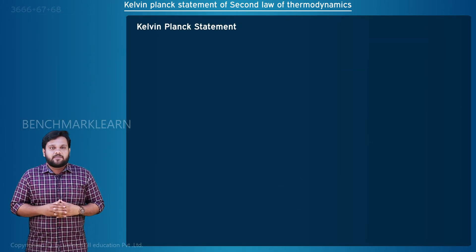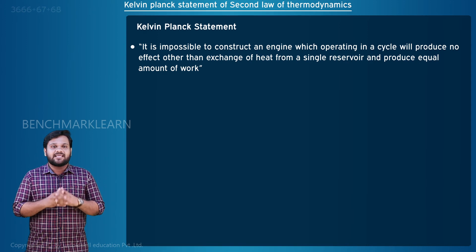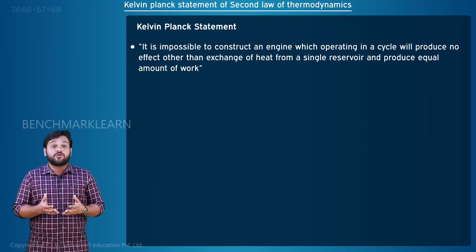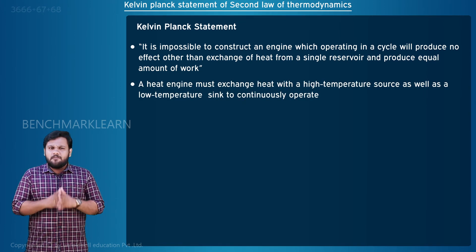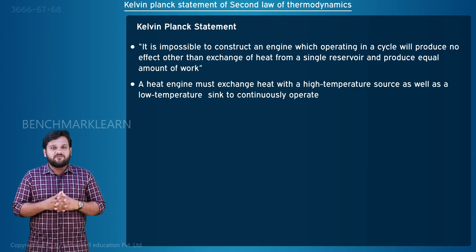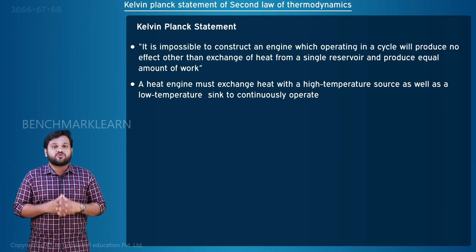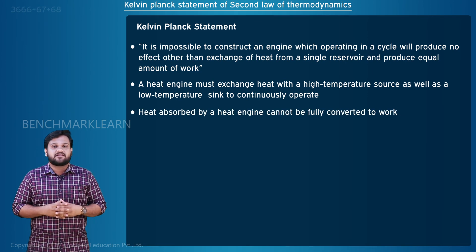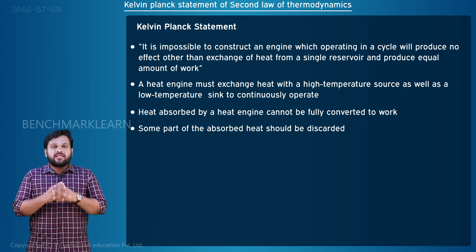Kelvin-Planck statement. The second law states that it is impossible to construct an engine which, operating in a cycle, will produce no effect other than the exchange of heat from a single reservoir and produce an equal amount of work. This means that a heat engine must exchange heat with a source at high temperature as well as a sink at low temperature to continuously operate. In other words, the heat absorbed by a heat engine cannot be fully converted to work — some part of the absorbed heat must be rejected.